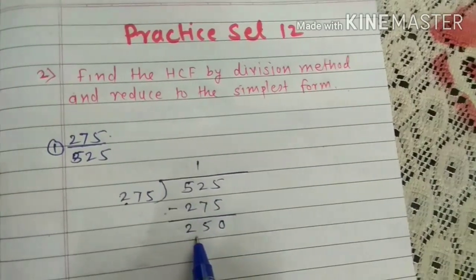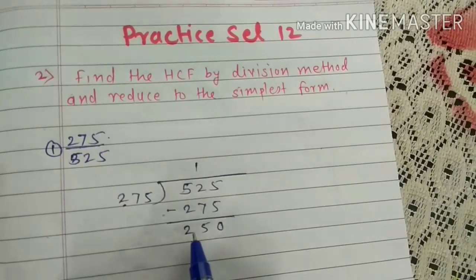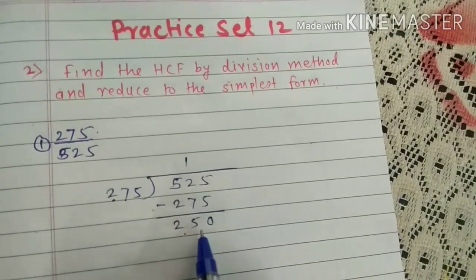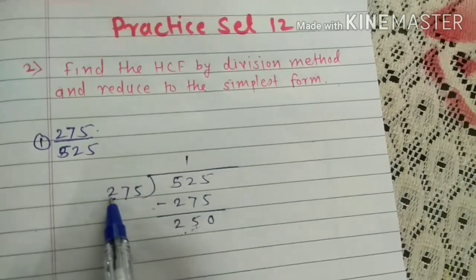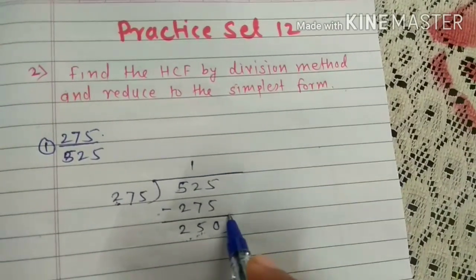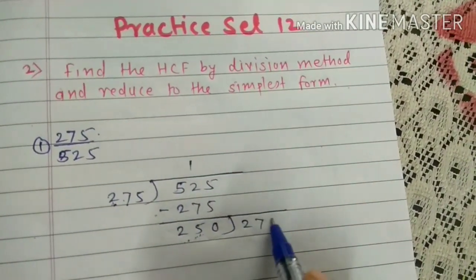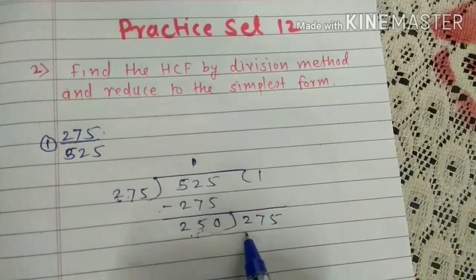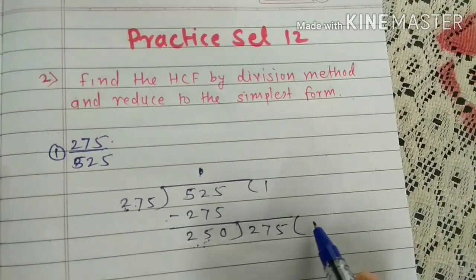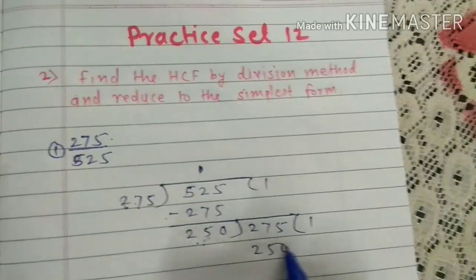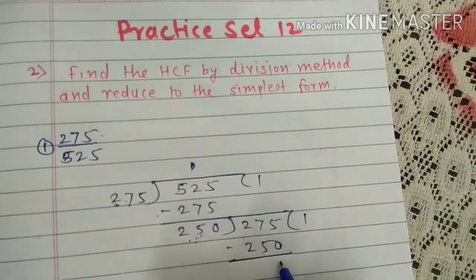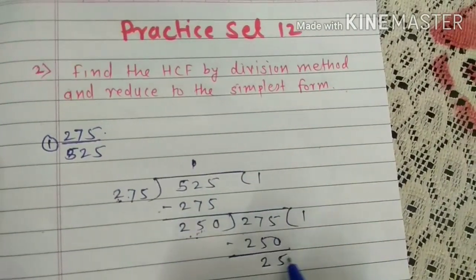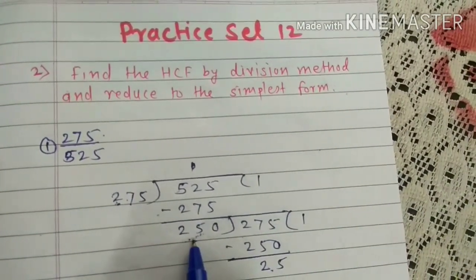Now divide the previous divisor by the remainder. The remainder that came is 250. So divide 275 by 250. 250 ones are 250. 275 minus 250 gives remainder 25. Now 25 will divide 250.